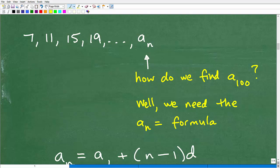So here is our problem. We have 7, 11, 15, 19. Well, we want the a sub n formula. So how do we find a 100? Well, we've got to get that formula first because we're not going to do all this math.